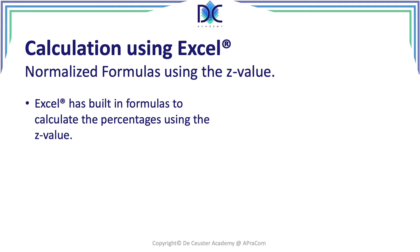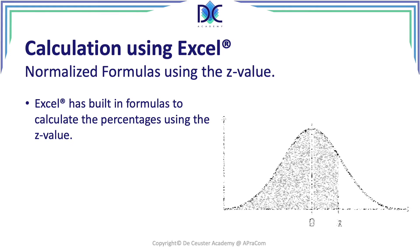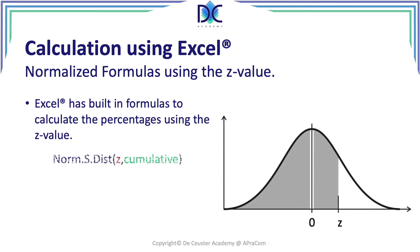The first formula we're going to look at is how to calculate those percentages of the normal distribution when we use the Z value. What we have in Excel is the NORM.S.DIST with two parameters: Z and cumulative.